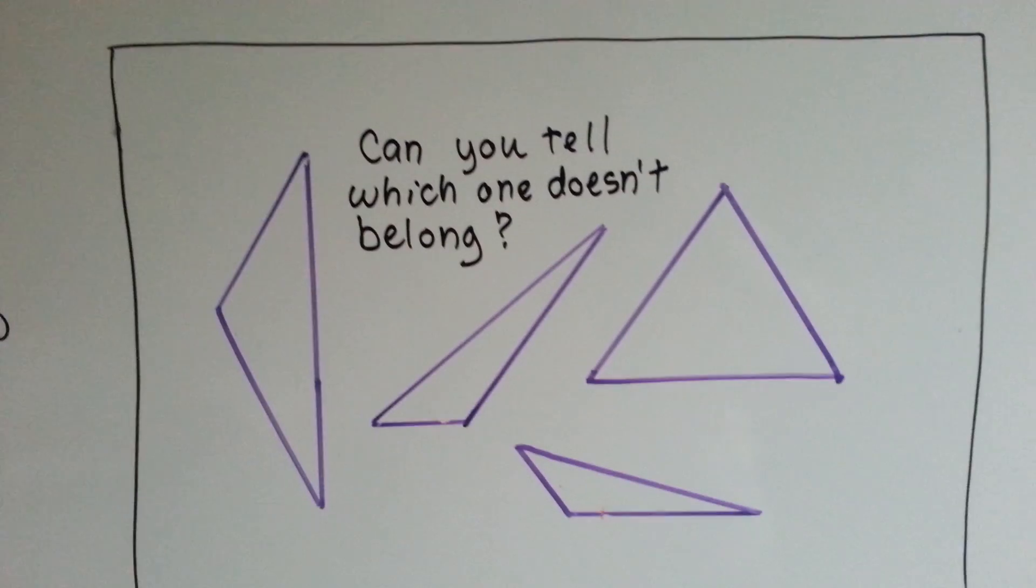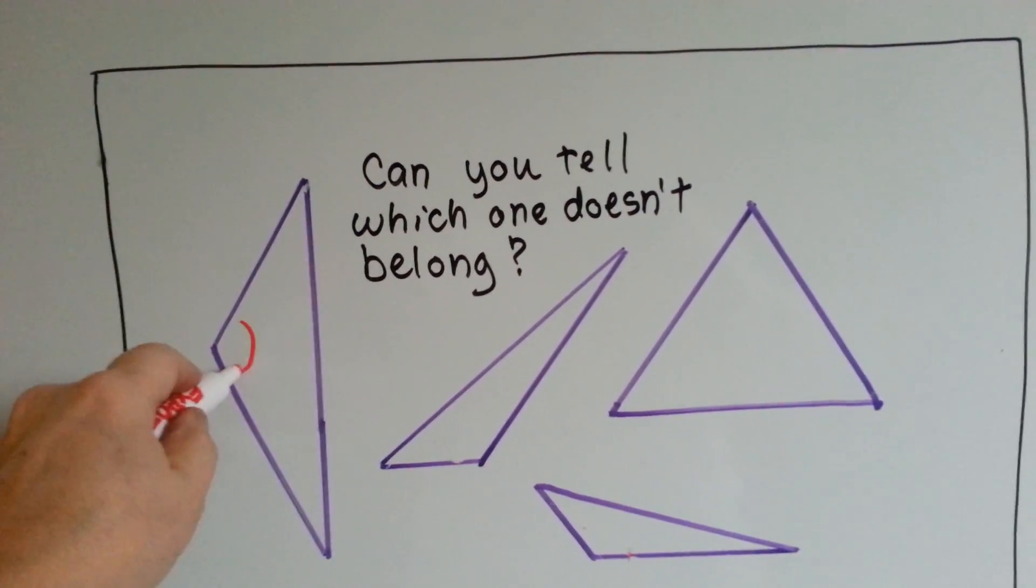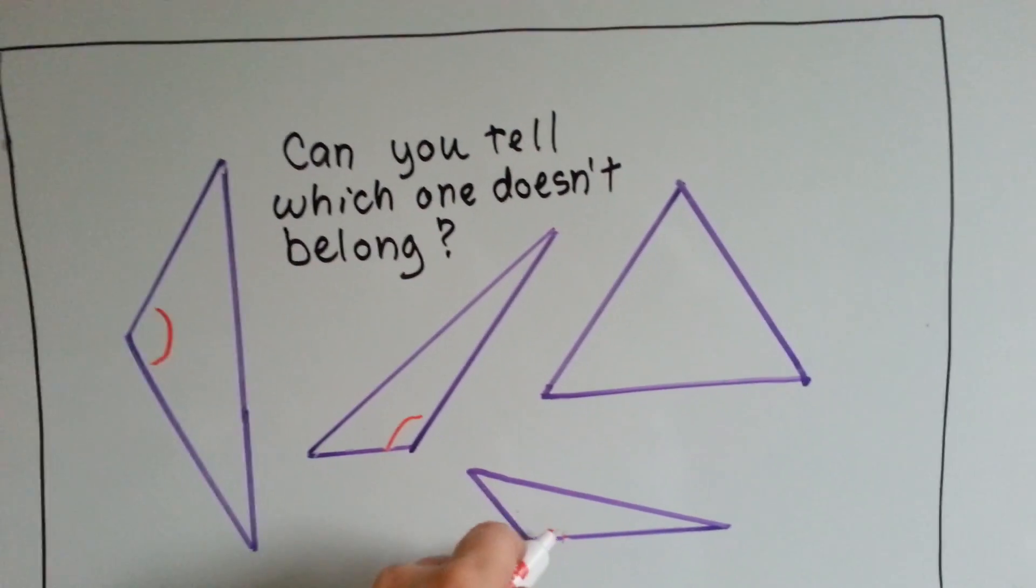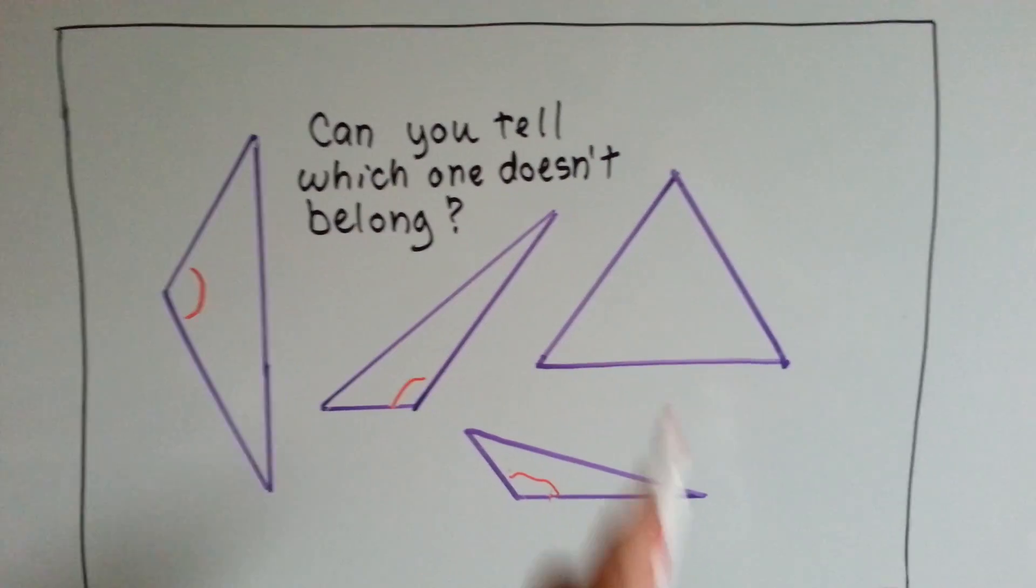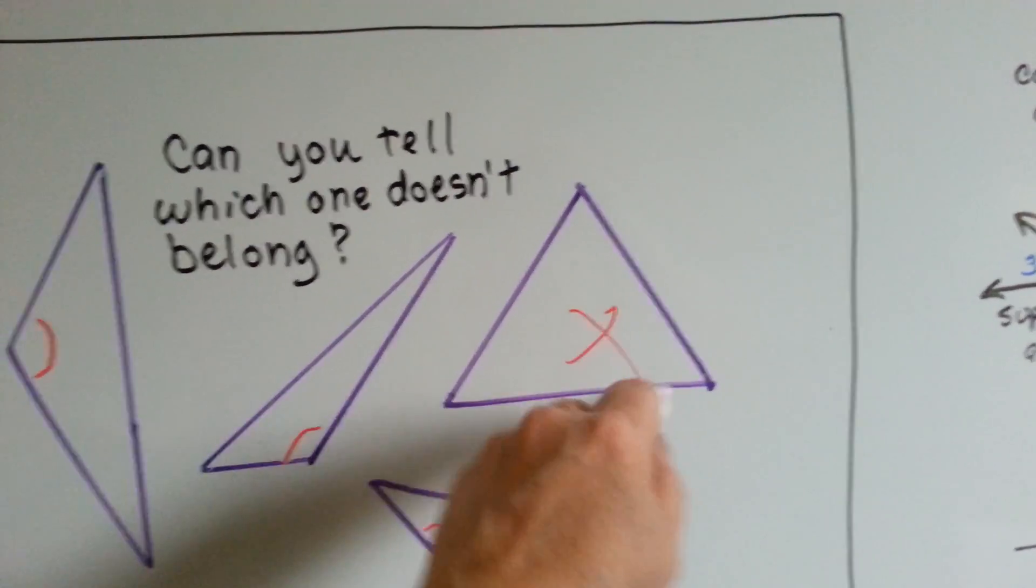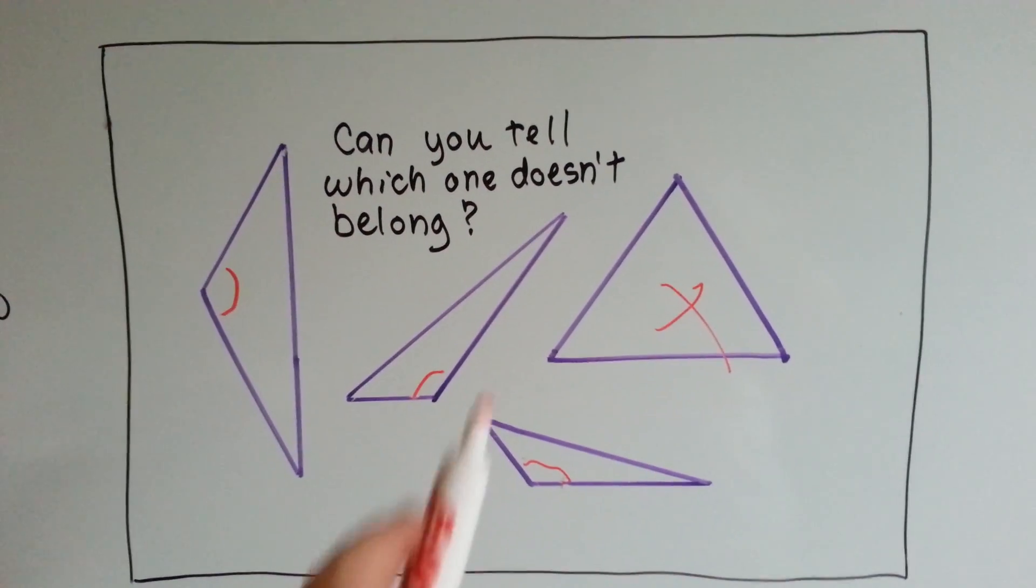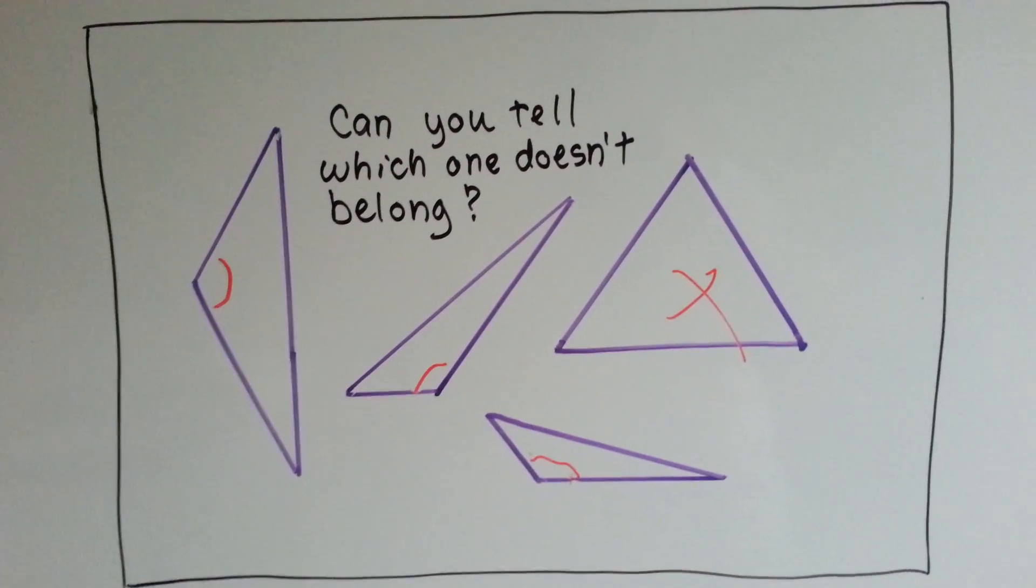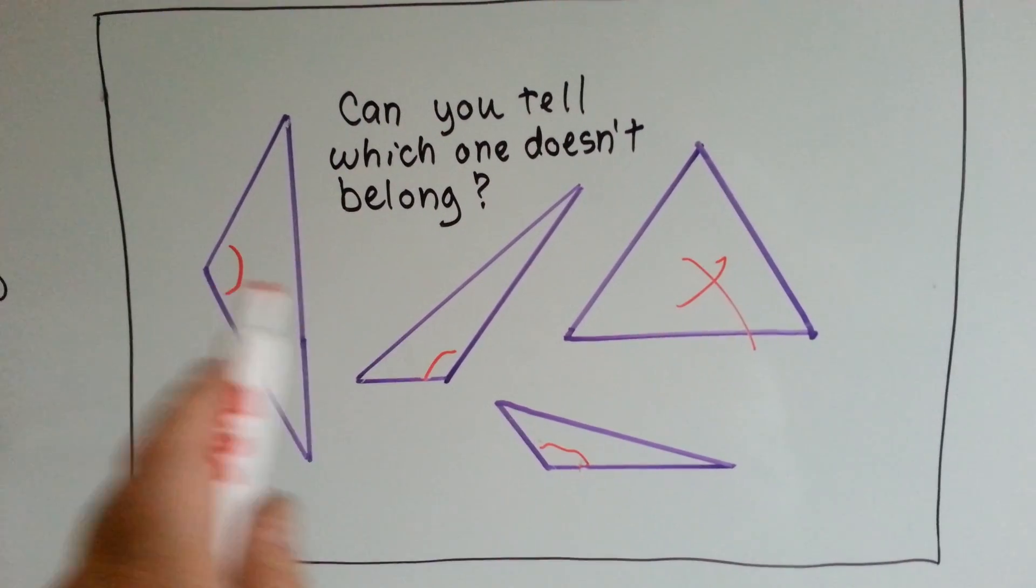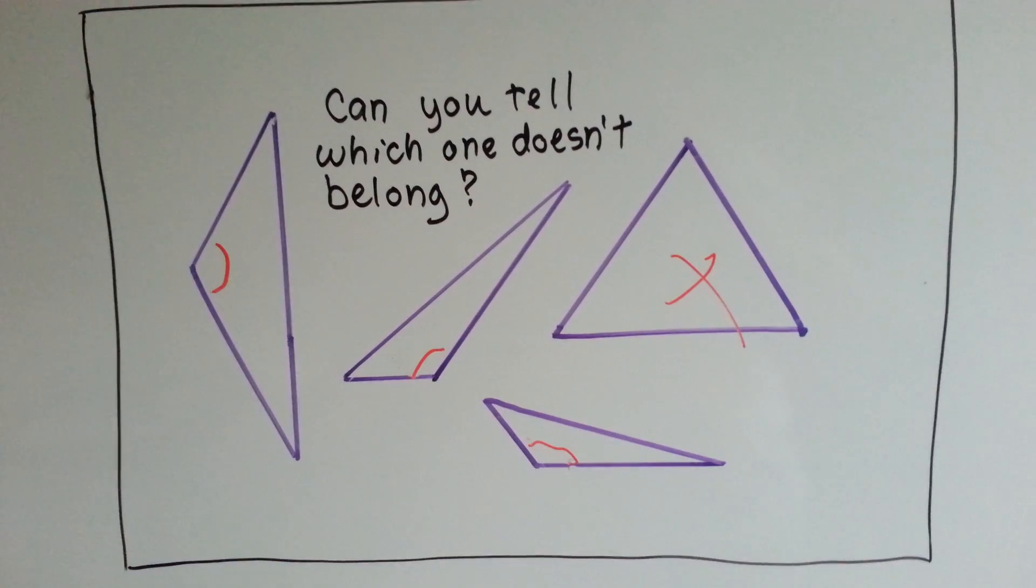Three of them are alike and one is different. Well, if you said this has got an obtuse angle, this has got an obtuse angle, and this has got an obtuse angle, you're right. And this one doesn't belong because it's got three acute angles. These are three obtuse triangles, and that's an acute triangle.